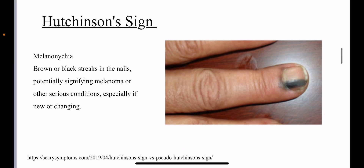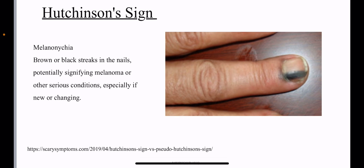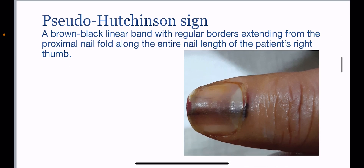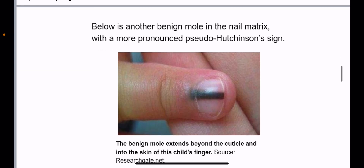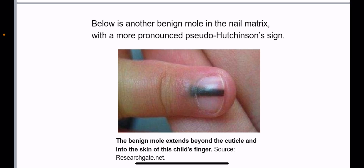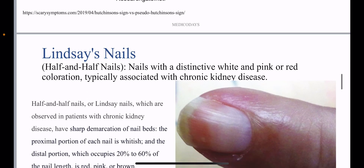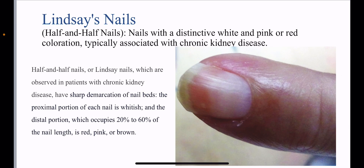The Hutchinson sign involves melanonychia — brown or black streaks in the nails — potentially signifying melanoma or other serious conditions, especially if new or changing. The pseudo-Hutchinson sign is a brown-black linear band with regular borders extending from the proximal nail fold along the entire nail length. This image shows a pseudo-Hutchinson sign, and this other image shows a benign mole in the nail matrix with a more pronounced pseudo-Hutchinson sign, where the benign mole extends beyond the cuticle and into the skin of the child's finger.